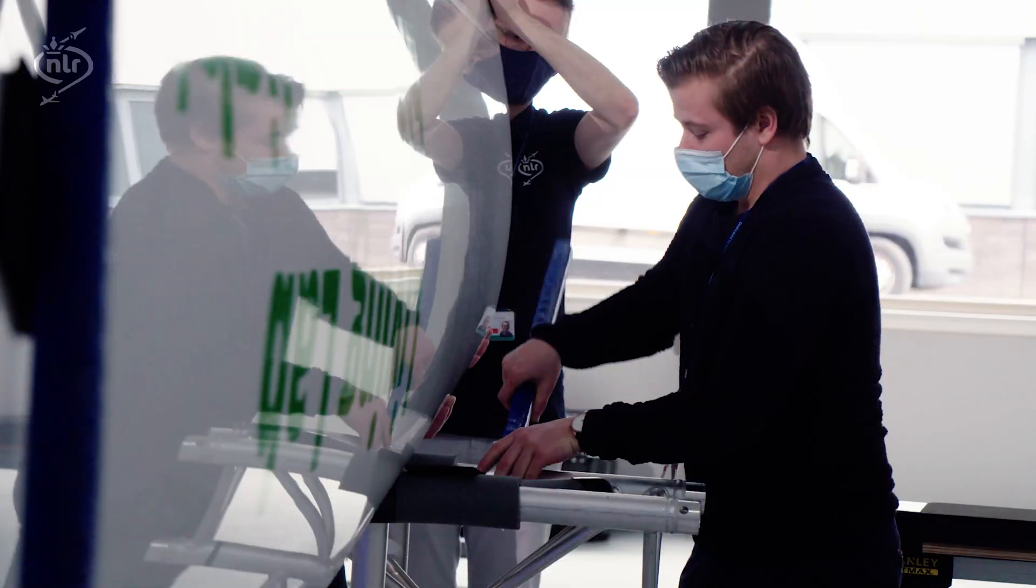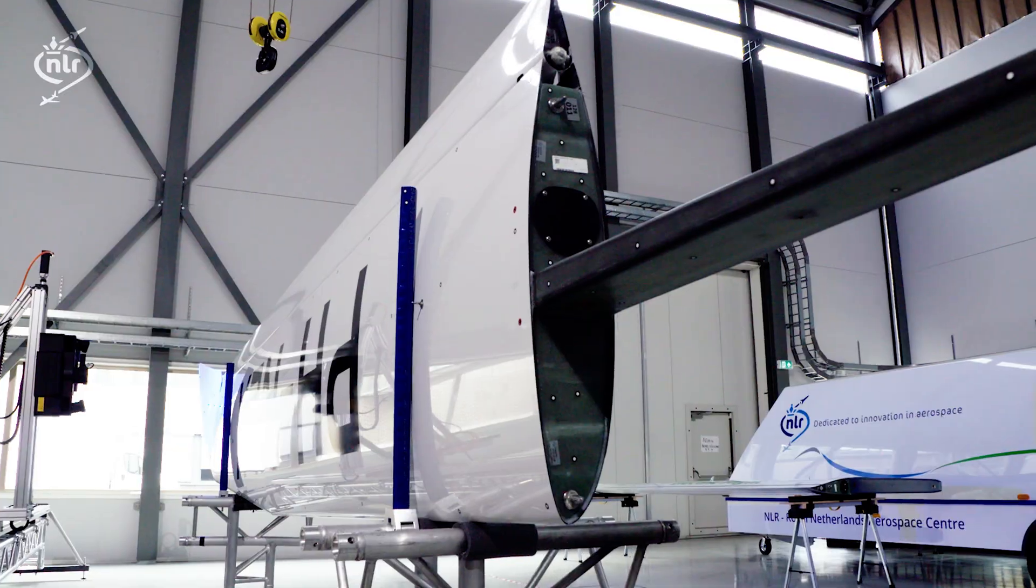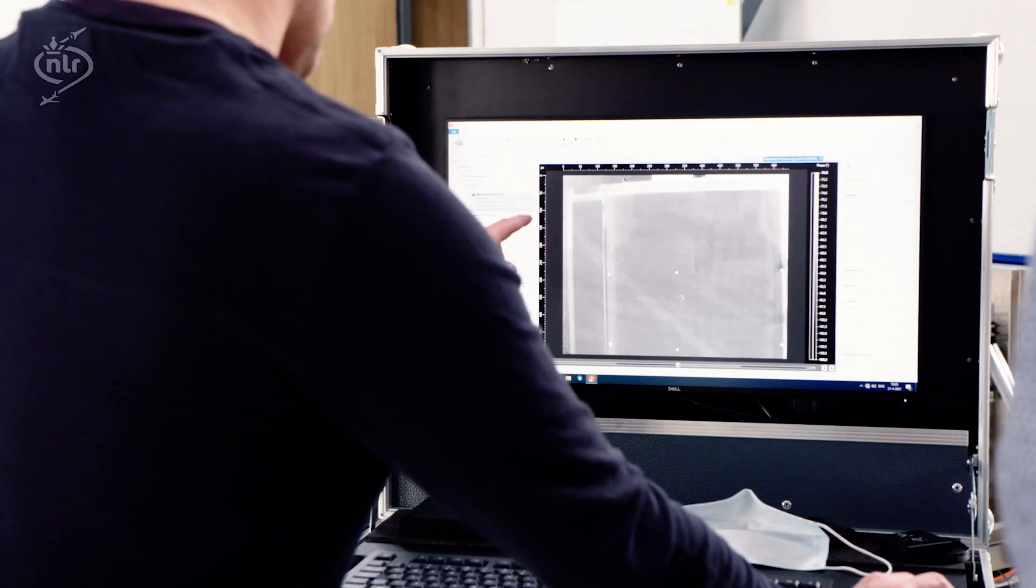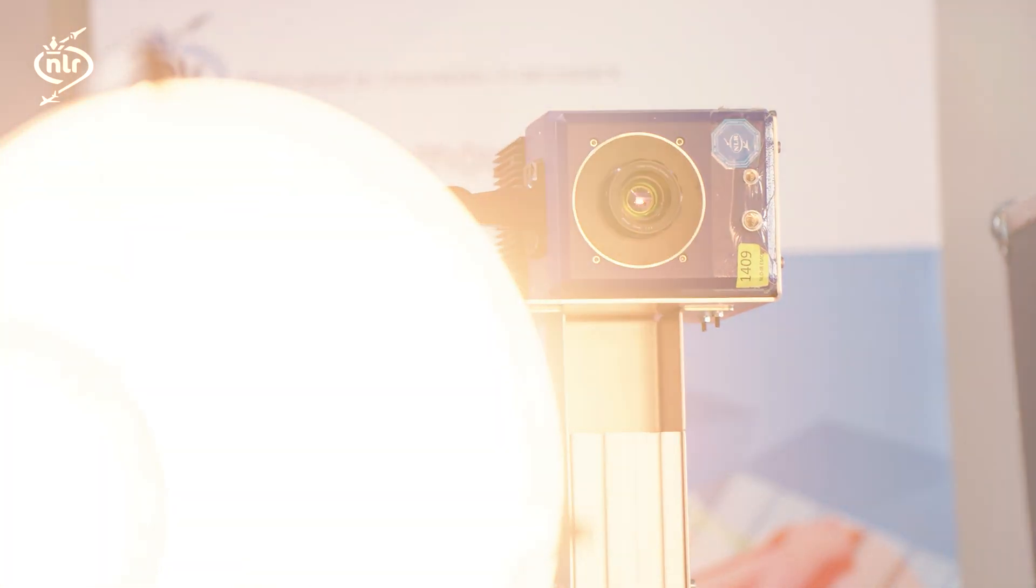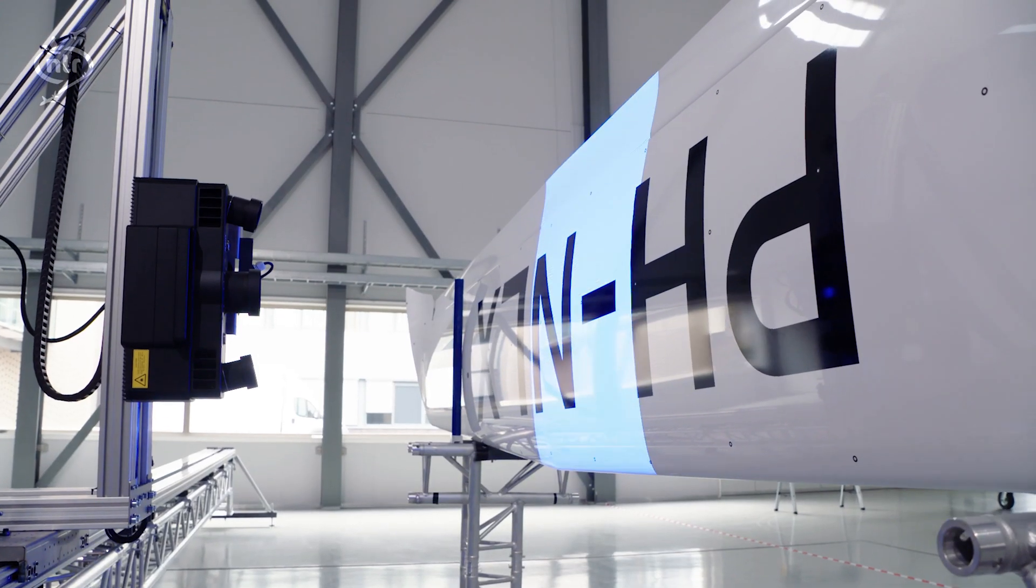We use a total of three techniques which are all non-contact and non-destructive. With these combined techniques we can for example detect if there are rivets loose, if there are dents on the surface, if there is delamination inside the skin, if there is a disbond between the core and the skin.